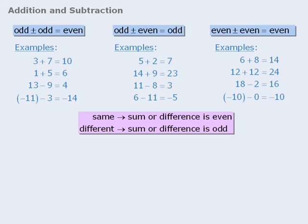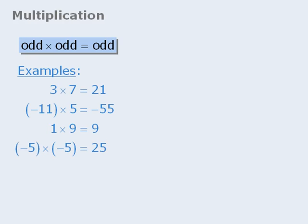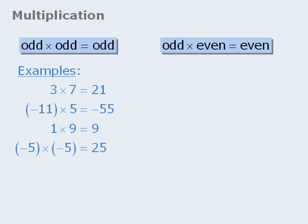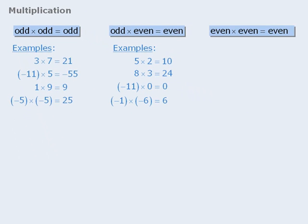The next set of rules involve multiplication. First, the product of two odd numbers will always be odd. Next, the product of an odd number and an even number will always be even. And finally, the product of two even numbers will always be even.